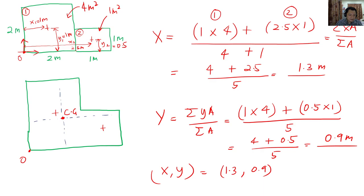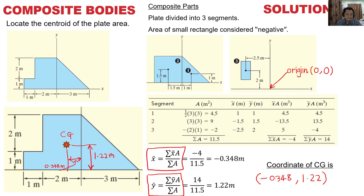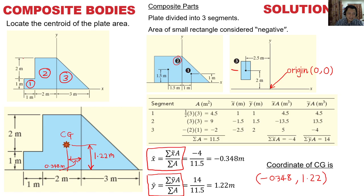Here's a more complex example with multiple objects. You can treat it as three separate objects, or alternatively take one large rectangle as object 2, subtract the void, and add the triangular portion. You can try this example to find the new CG coordinates for the composite shape.